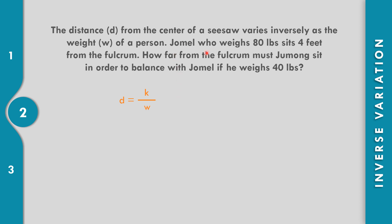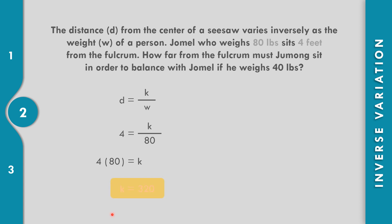The weight of Jomel is 80 pounds, so W equals 80, while the distance is 4 feet. So, 4 equals k over 80. Let us multiply both sides by 80 — cancel on the right side. So, 4 times 80 equals k. That is 320 equals k, or k equals 320.